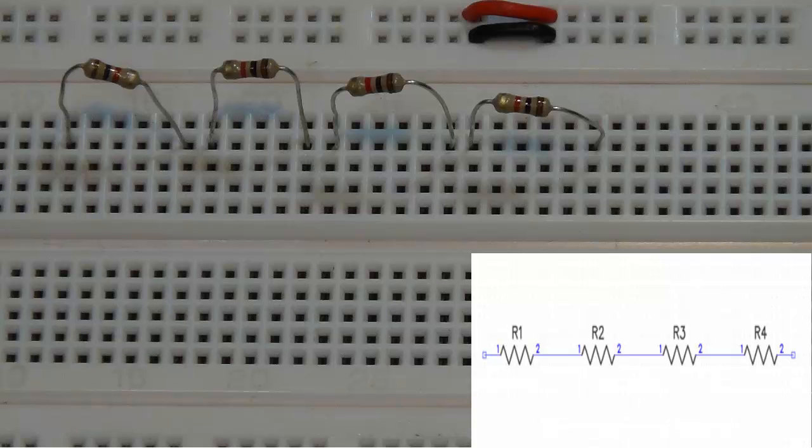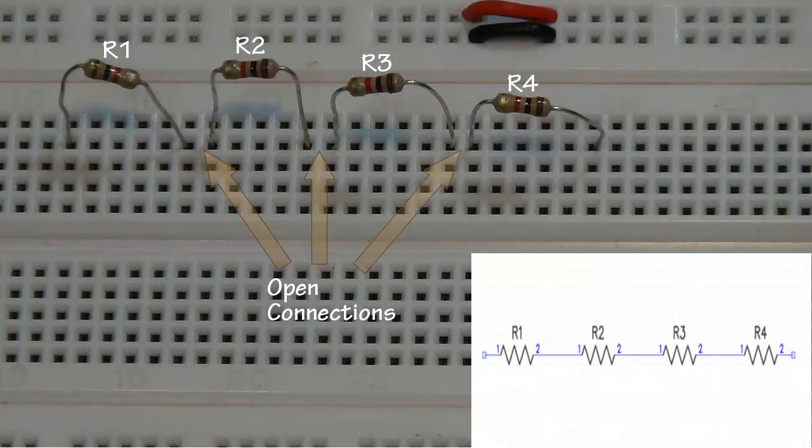Now I have a series circuit consisting of four resistors, R1, R2, R3 and R4. The resistors are currently connected on the project board, but we have a little bit of a problem. The connection between R1 and R2 has an open connection. The connection between R2 and R3 has an open connection. And the connection between R3 and R4 has an open connection. Therefore this circuit will not work.